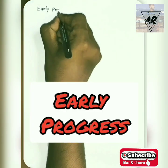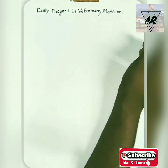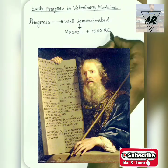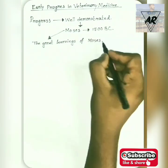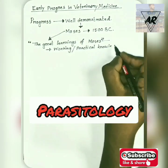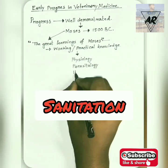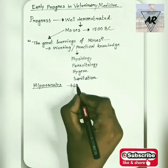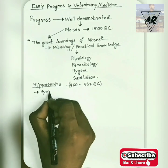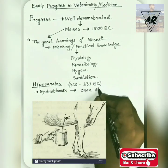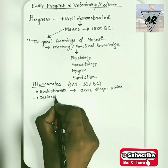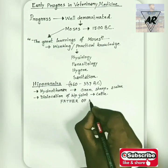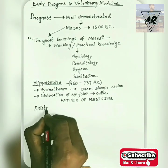The early progress period was well demonstrated in the time of Moses, around 1500 BC. His great learning included at least a working knowledge of physiology, parasitology, hygiene, and sanitation. Then comes the period of Hippocrates, during 460 to 337 BC. Hippocrates described hydrothorax in oxen, sheep, and swine, and mentioned the dislocation of the hip joint in cattle. Due to his tremendous contribution in the field of medicine, he is considered the father of medicine.